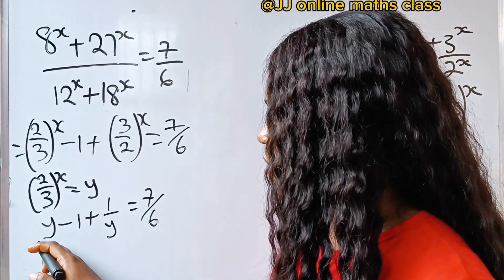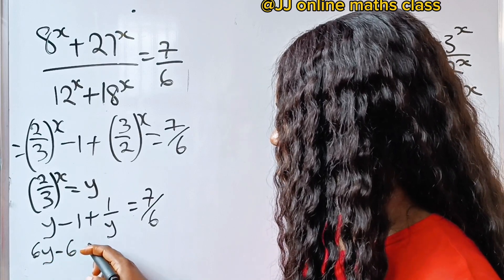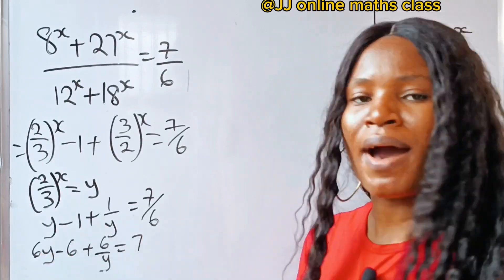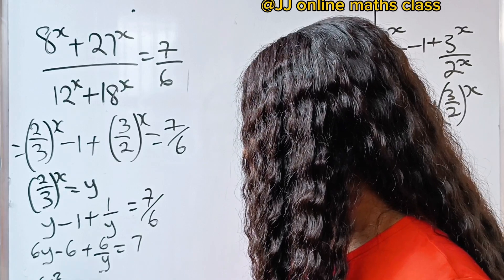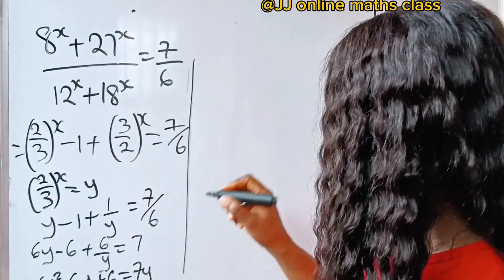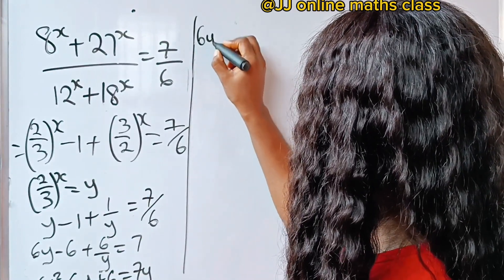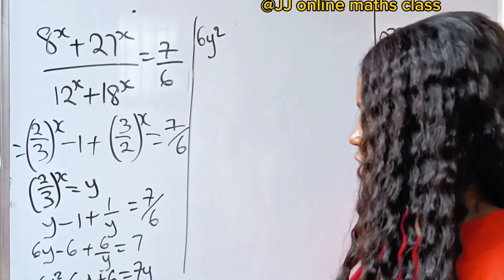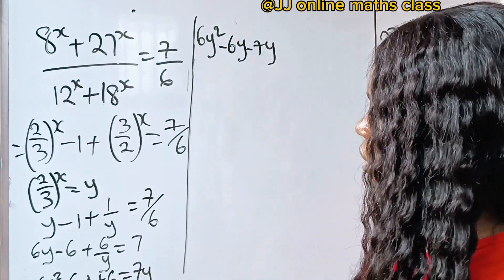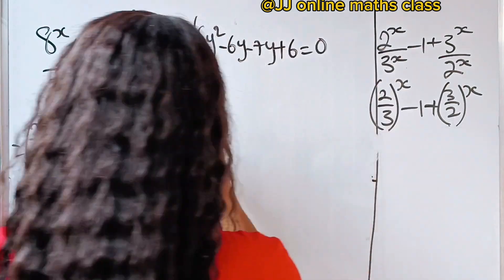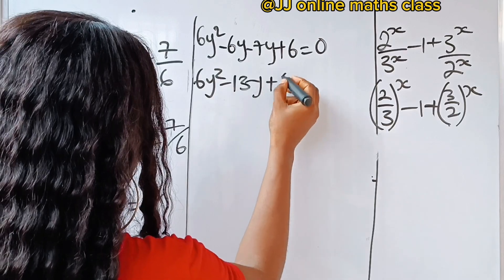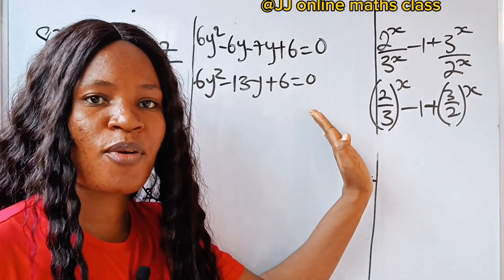To clear fractions, multiply through by 6: 6y minus 6 plus 6/y equals 7. Then multiply through by y: 6y² minus 6y plus 6 equals 7y. Rearranging, 6y² minus 13y plus 6 equals 0. We now have a quadratic equation.